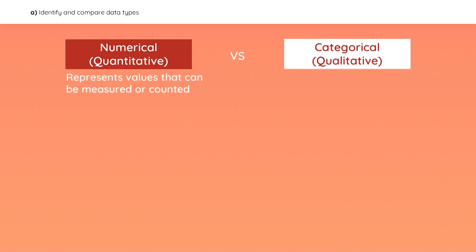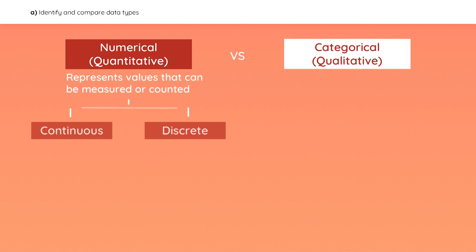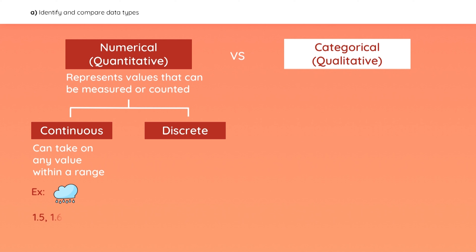Numerical data represents values that can be measured or counted. It can be split into continuous data and discrete data. Continuous data can take on any value within a range. For example, the inches of rain in a month could fall within one and two inches — it may be 1.5, 1.68, etc.